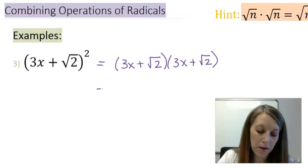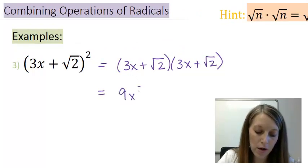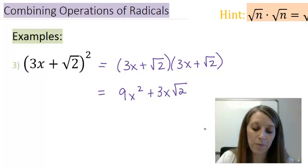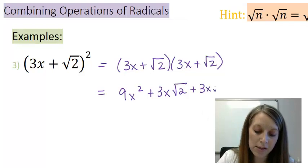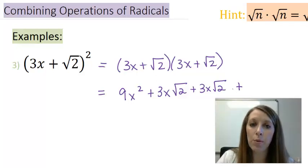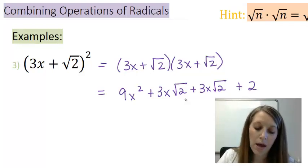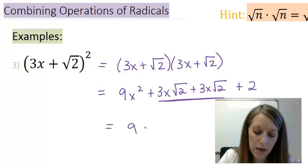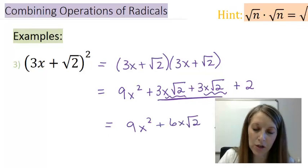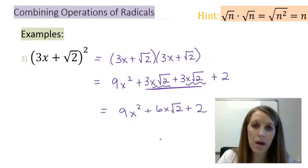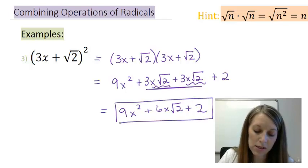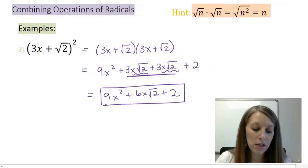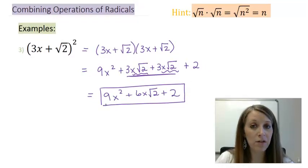It's just a FOIL from here. First: 3x × 3x = 9x². Outside: 3x × √2 = 3x√2. Inside: √2 × 3x = 3x√2. Last: √2 × √2 = 2. Combining the middle two terms: 3x√2 + 3x√2 — the like term is x√2, so 3 + 3 = 6, giving 6x√2. My final answer is 9x² + 6x√2 + 2. I cannot go any further because there are no like terms remaining. We've now seen quite a few polynomial-style examples with square roots involved.